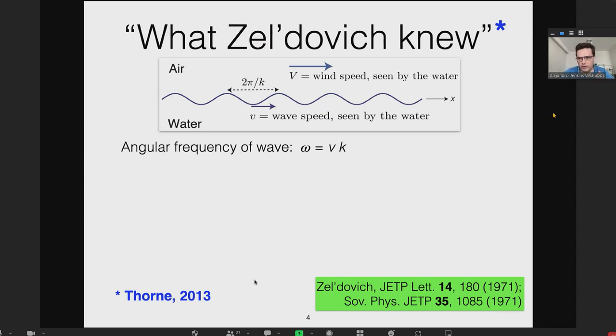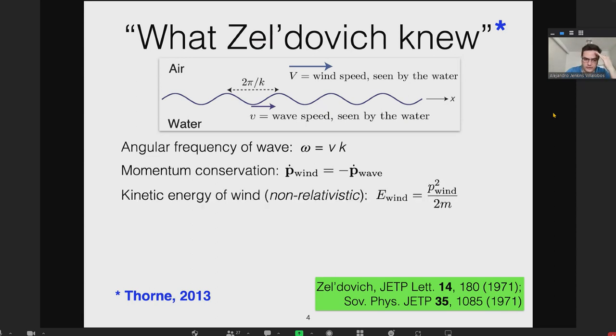I'll do a toy derivation in quantum theory, which is a bit strange but this is what Zel'dovich was thinking. Imagine a layer of air blowing with velocity V and a layer of water at rest. The air can excite a wave in the interface with phase velocity v. The angular frequency ω = vk. Whatever is happening must respect momentum conservation, which is a consequence of translational invariance of the system.